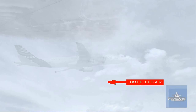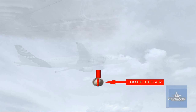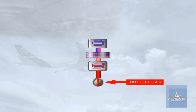Hot bleed air enters the pack via a pack flow control valve. Its function is to adjust the flow rate through the pack. The air then passes through several stages within the pack that progressively cool the air to provide a conditioned air output.